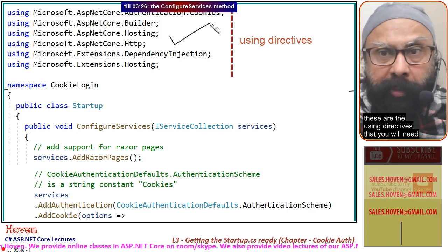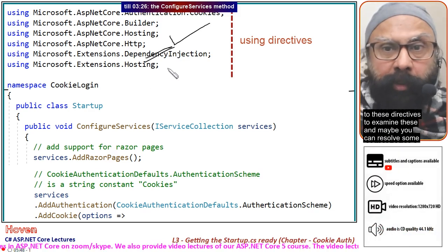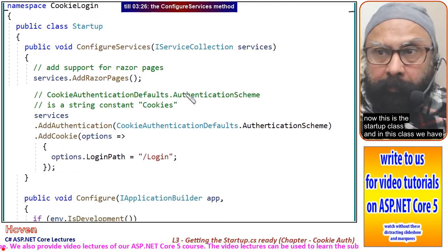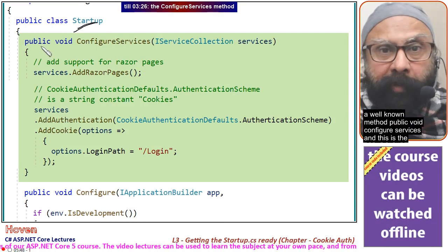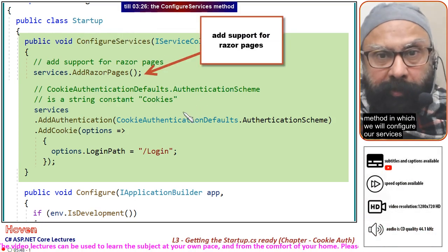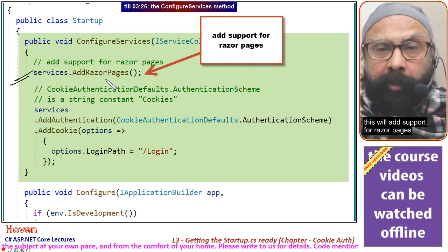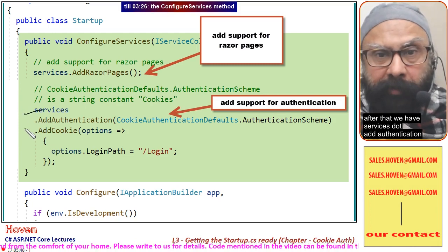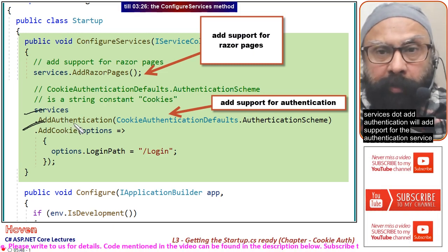These are the using directives that you will need. If you get compilation errors, you can always come back to these directives to examine them and resolve some of the errors. This is the startup class, and in this class we have a well-known method — public void ConfigureServices — which is where we will configure our services. The first thing we write is services.AddRazorPages(), which adds support for Razor Pages. After that we have services.AddAuthentication(), which adds support for the authentication service.